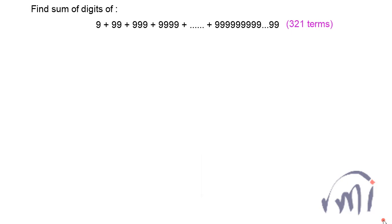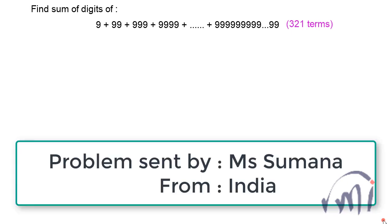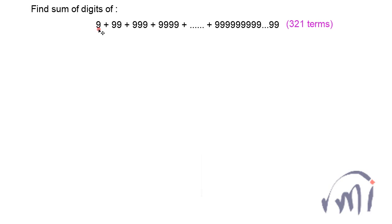Hi, so here we have a problem which was sent by Ms. Sumana from India. In this problem we have a series of numbers whose all digits are 9. The first term is 9, second term is 99, third term is 999, and in this way we have a total of 321 terms — meaning the last term has 321 nines. We have to find the sum of the digits of that addition.